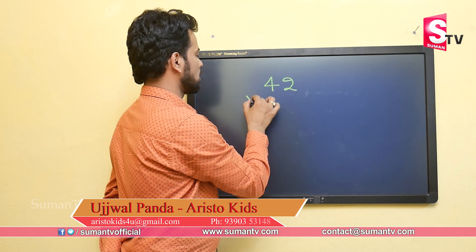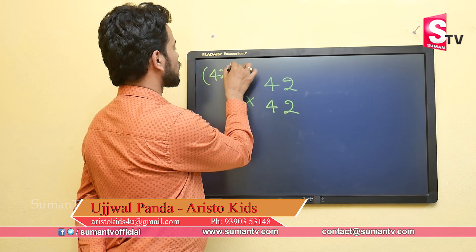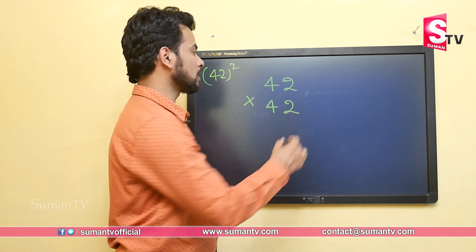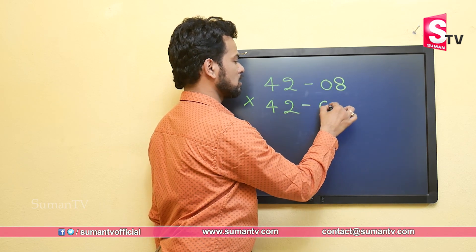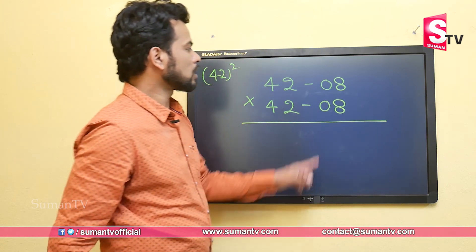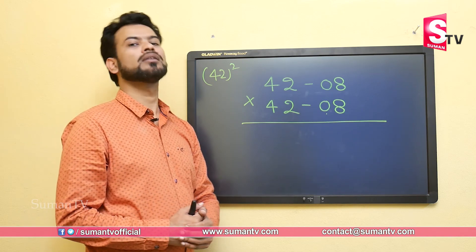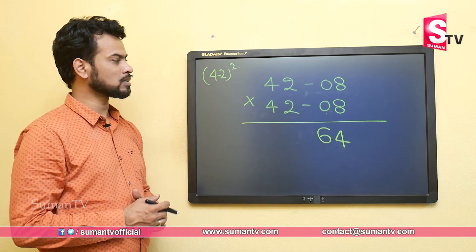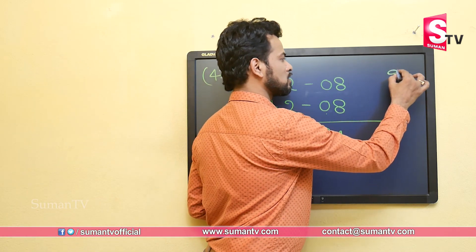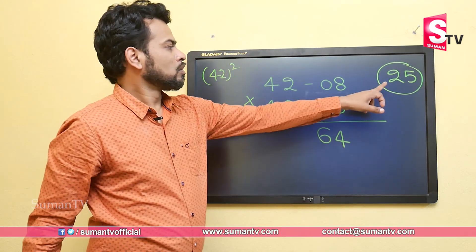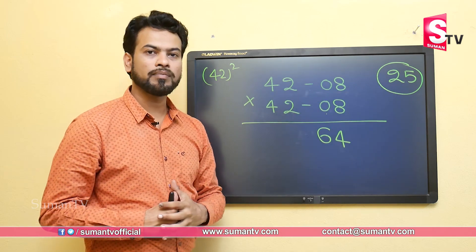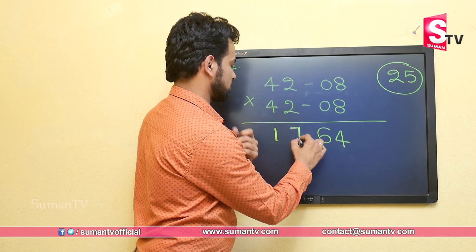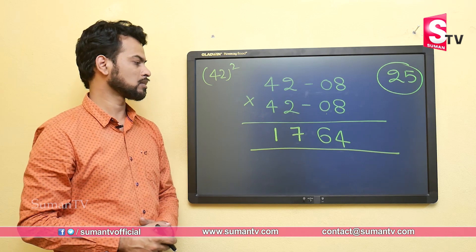Let's take one more example: 42 squared, meaning 42 multiplied by 42. Since 42 is less than 50, we get 42 minus 50 equals minus 08. In step one, minus 08 multiplied by minus 08 equals plus 64. In step two, we subtract 8 from the magic number 25: 25 minus 8 equals 17. So 42 squared is 1764.